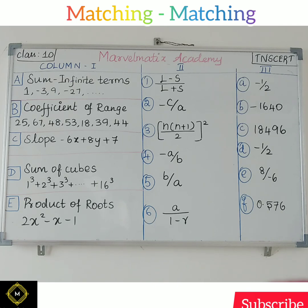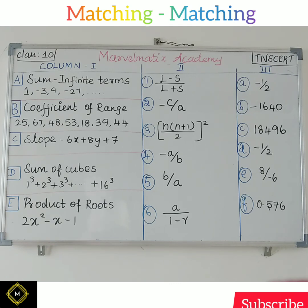Question B: coefficient of range. So, Tamilina Suri 10. Sum of infinity terms: 3-3, 1-3, 2-3, coefficient of range. We will choose the numbers: 25, 67, 48, 53, 18, 39, 44.